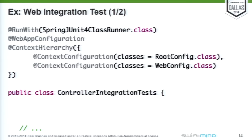Here, the top level would be configured with the root config Java configuration class and app configuration class, and then another level specifying the web config. The first layer would contain our service layer, repositories, infrastructure — and the bottom layer would have our web MVC-specific components. Last but not least, here we're specifying @ActiveProfiles — so if we're making use of bean definition profiles in our configuration, we can say we only want to use the beans configured with the dev profile. That's the basics for getting the configuration set up.